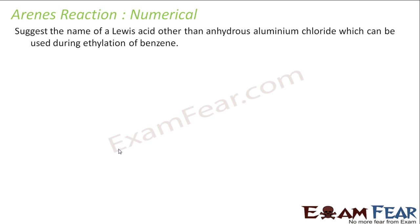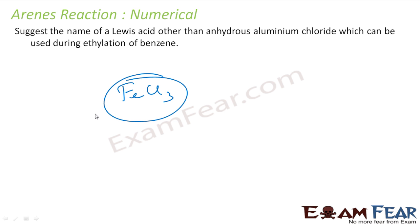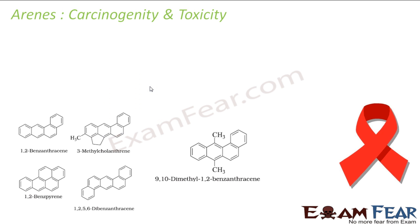Another Lewis acid besides AlCl3 that can be used for Friedel-Crafts alkylation of benzene is FeCl3. So instead of AlCl3, you can also use iron(III) chloride (FeCl3) as the Lewis acid catalyst.